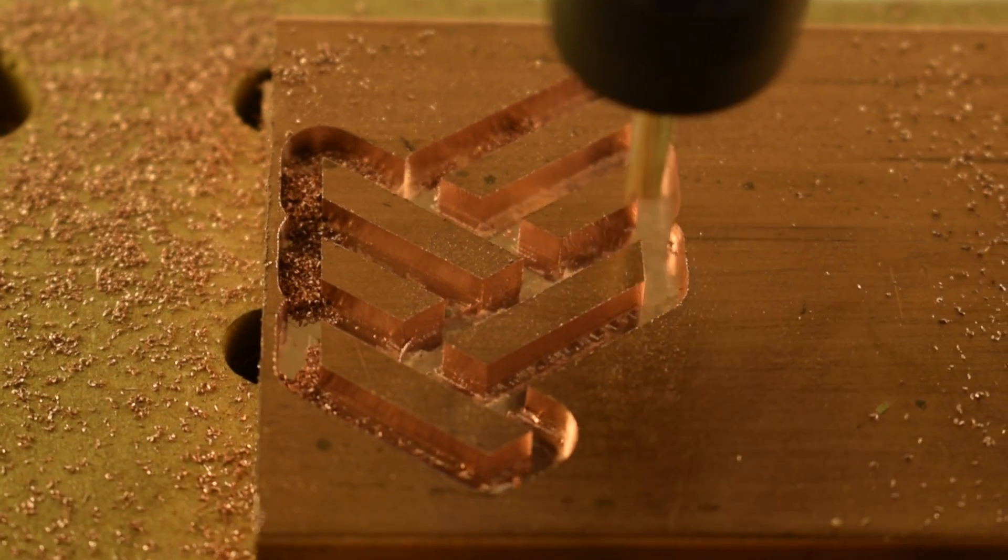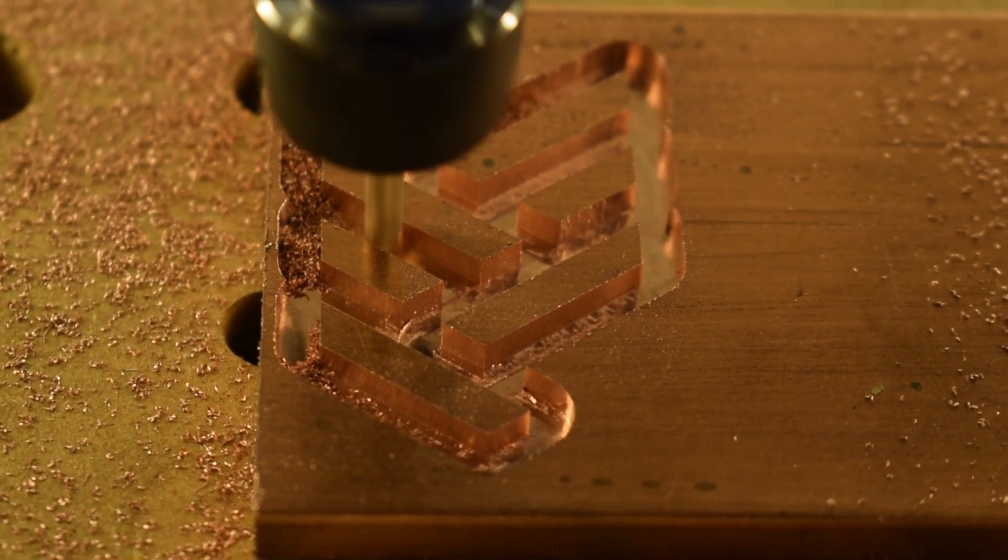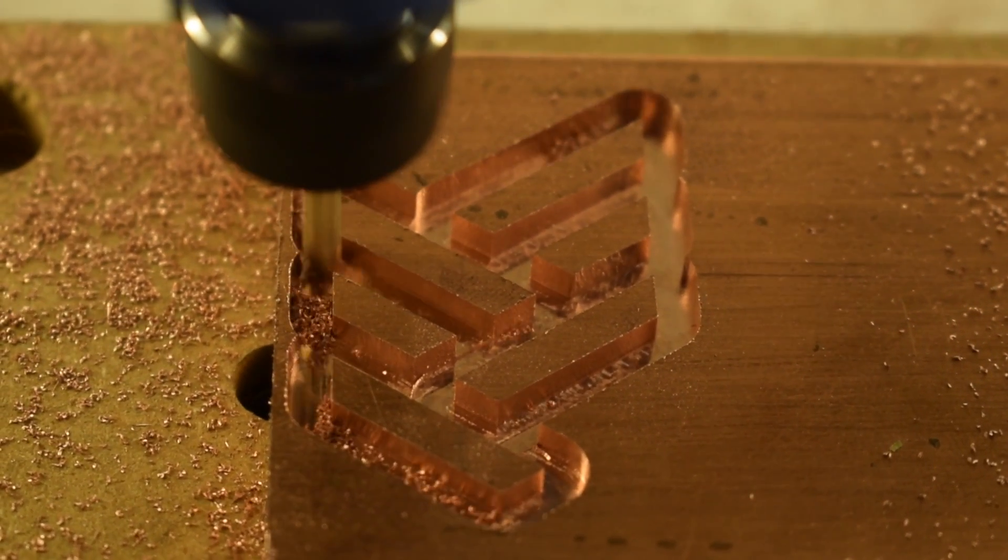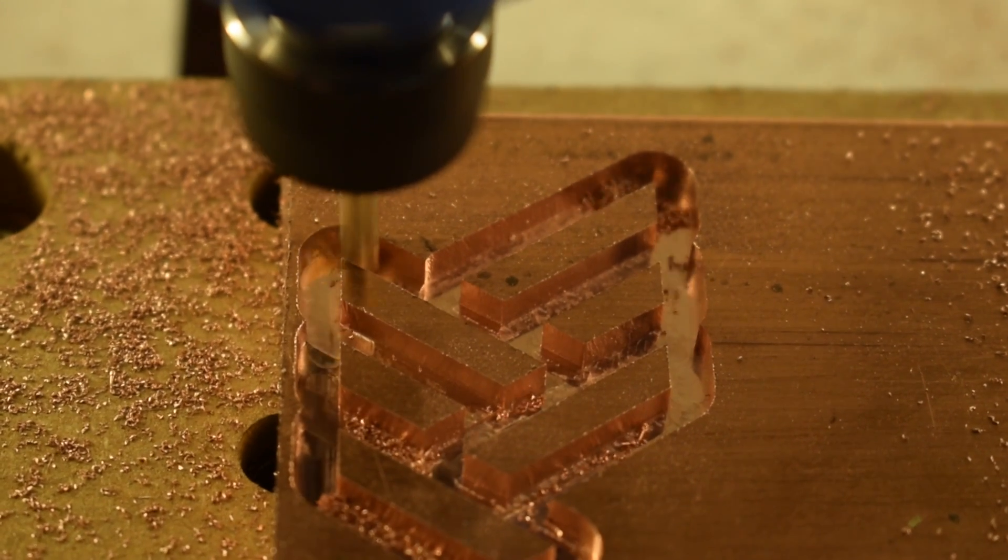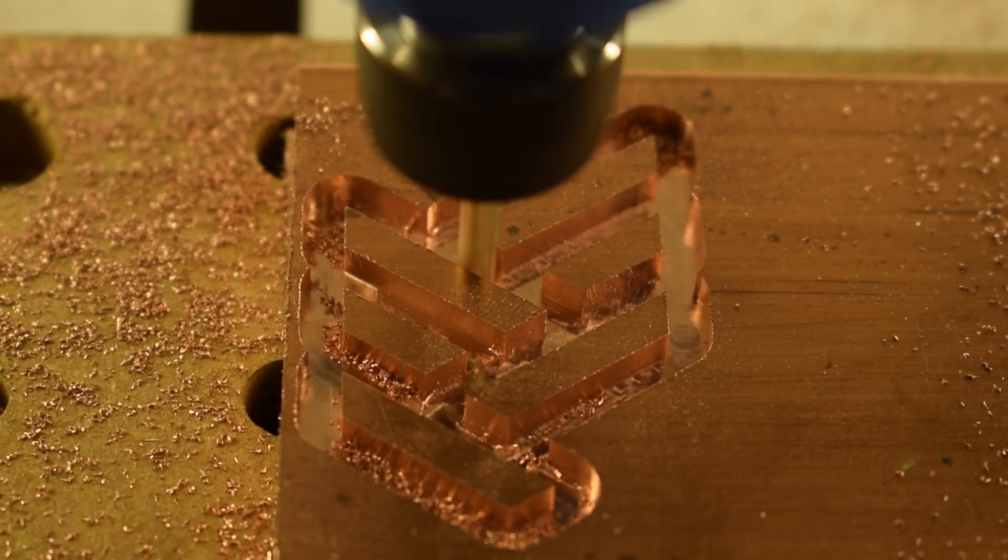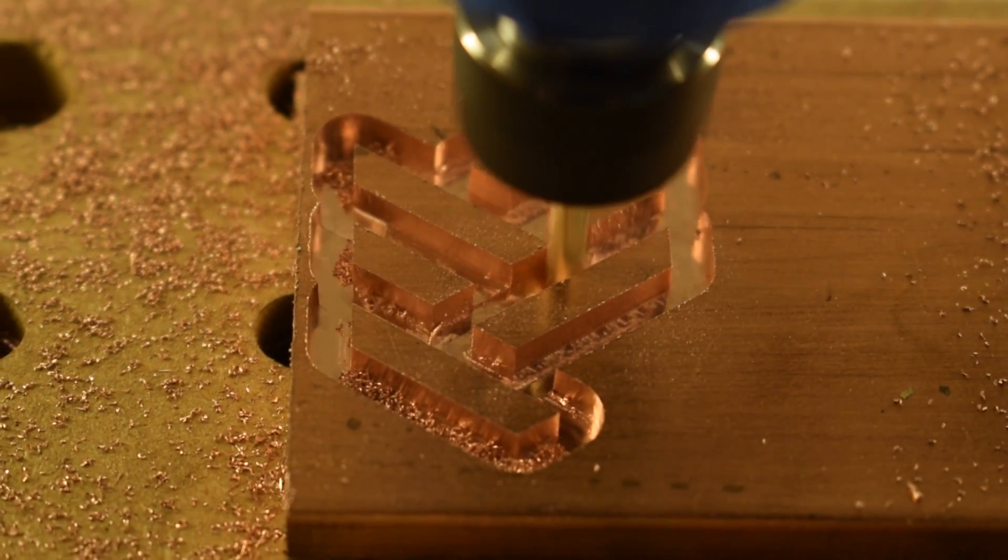Looking purely at the numbers, C145 copper is about 10% stronger than aluminum and three times as dense. We are definitely going to have to choose cutting parameters that are more conservative than our typical aluminum feeds and speeds.